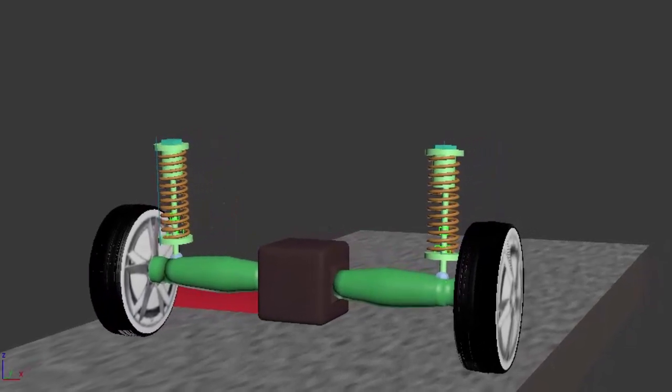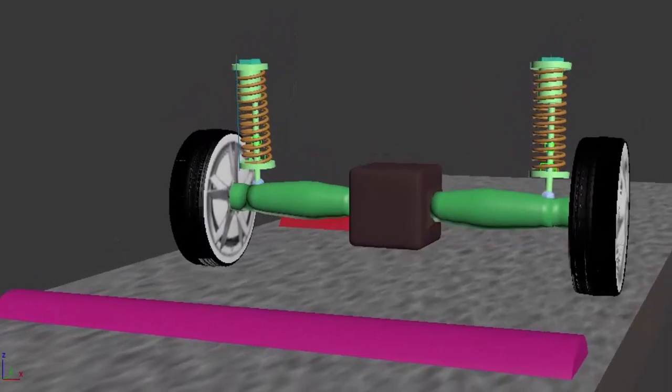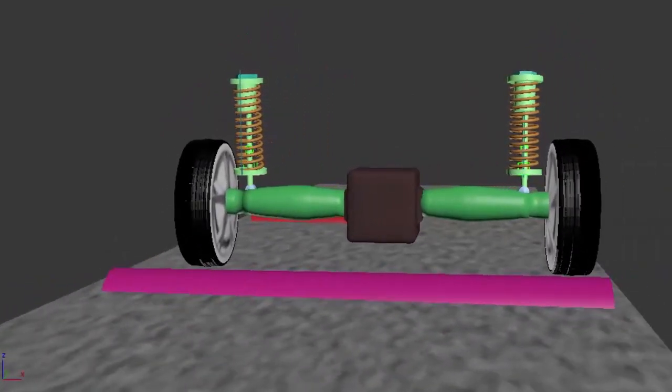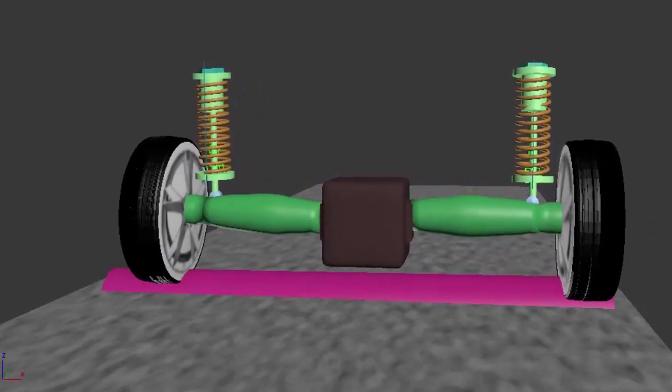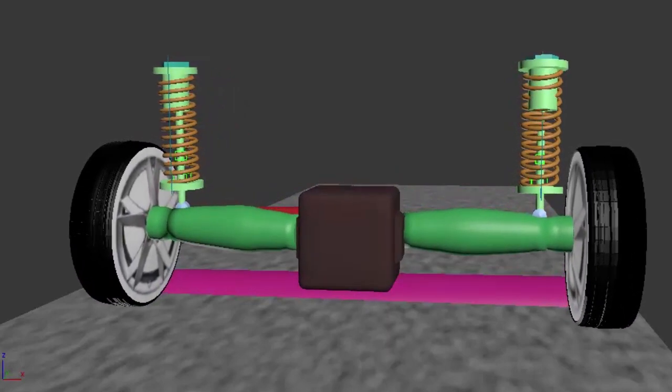Also we can see that the disturbance is not transferred to the opposite wheel. So we can see that both the half axles work independently and are proper for absorbing disturbances.